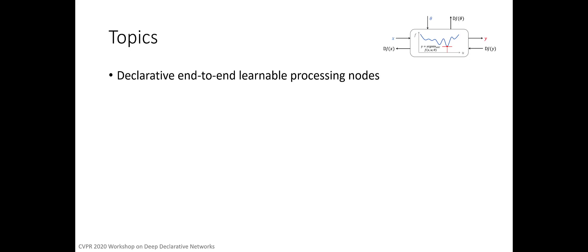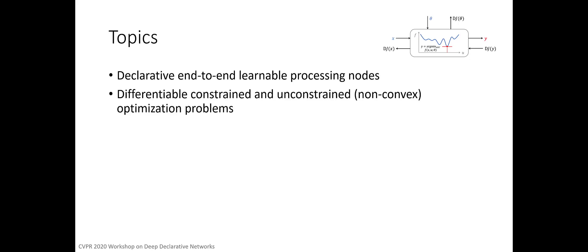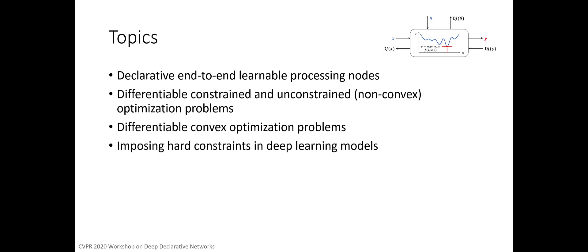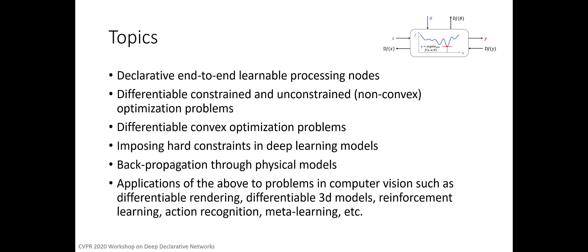Topics include declarative end-to-end learnable processing nodes, differentiable constrained and unconstrained optimization problems, differentiable convex optimization problems, imposing hard constraints in deep learning models, backpropagating through physical models, and applications of the above to problems in computer vision such as differentiable rendering, differentiable 3D models, reinforcement learning, action recognition, meta-learning, and so on.